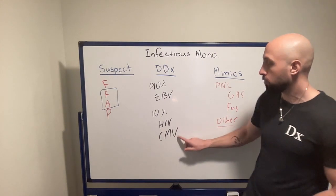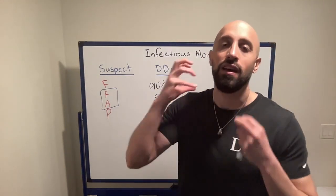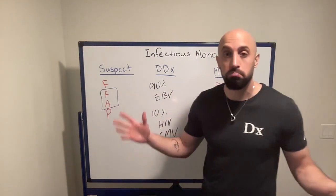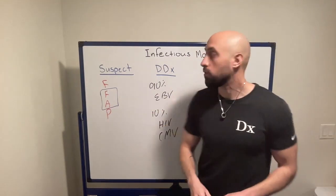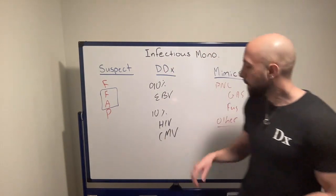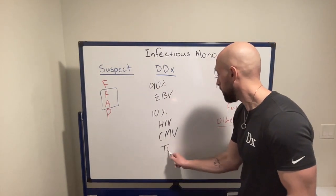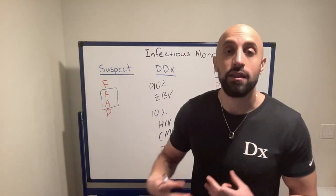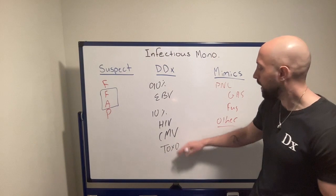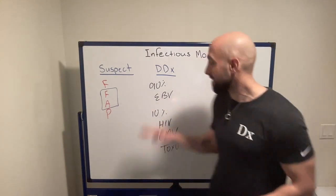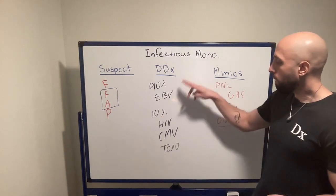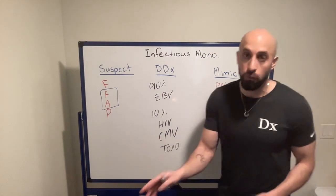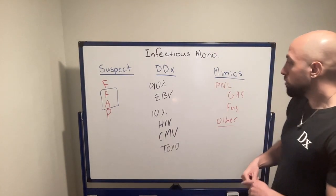Another thing in the differential diagnosis is CMV, but CMV doesn't really cause severe pharyngitis — though it can lead to atypical lymphocytes and lymphocytosis that we see in infectious mononucleosis. The last one to think about is toxoplasma, but toxoplasma doesn't usually cause pharyngitis or abnormal liver chemistry tests. So you can quickly prioritize this list once you have infectious mononucleosis. My friend had an HIV test that was negative and a CMV test that was negative.